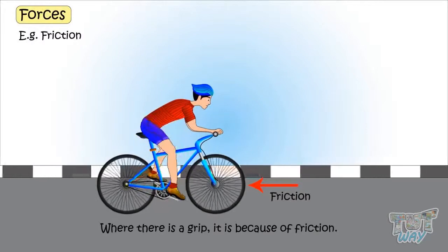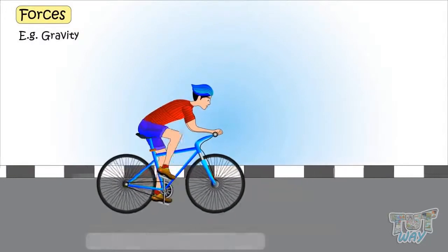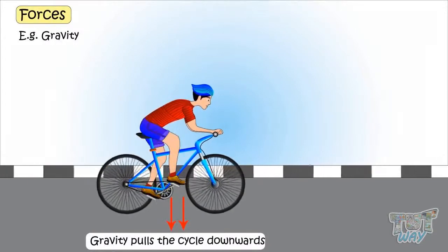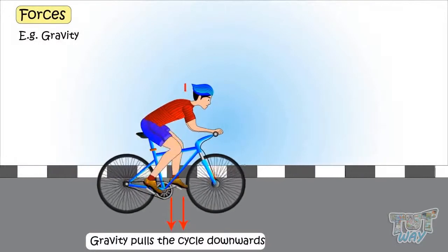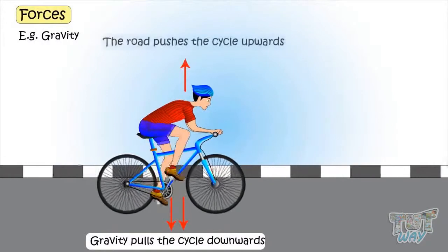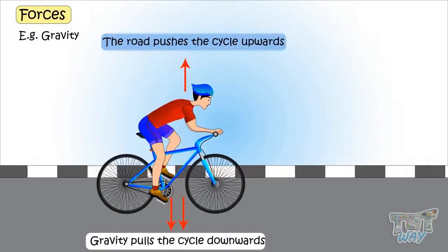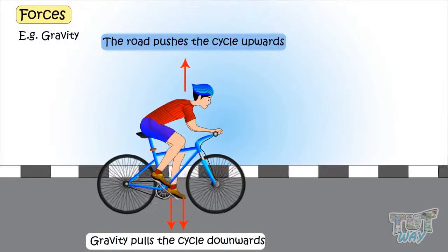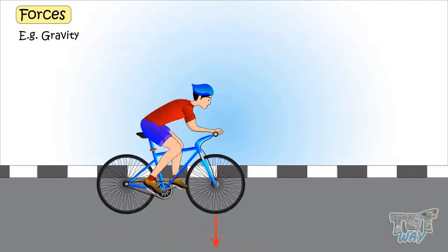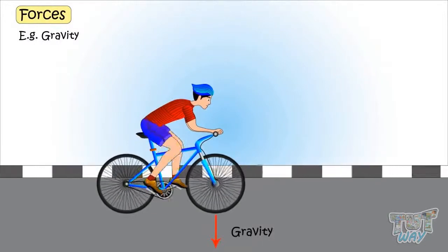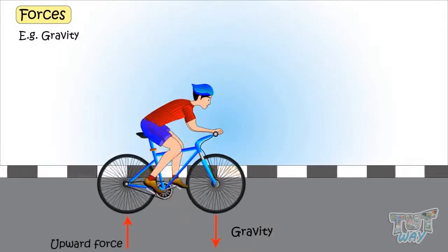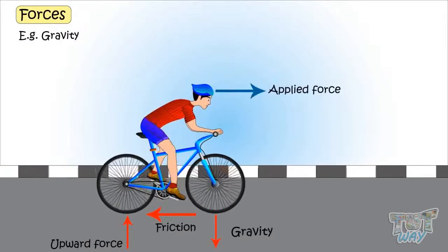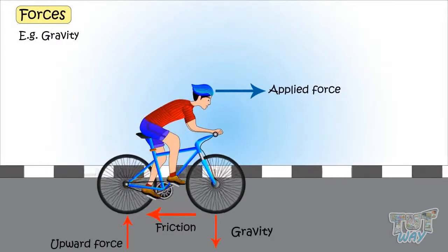The next force acting here is gravity. The force of gravity pulls the cycle downwards. There is also a force acting from the ground, which is pushing it upwards. So there are different forces acting while we are riding a bicycle: gravity is pulling down, the ground is pushing upward, friction is opposing the movement, and the applied force, or muscular force, is moving it forward.